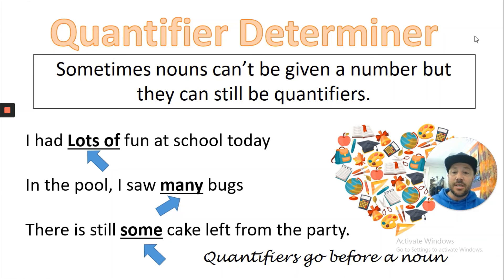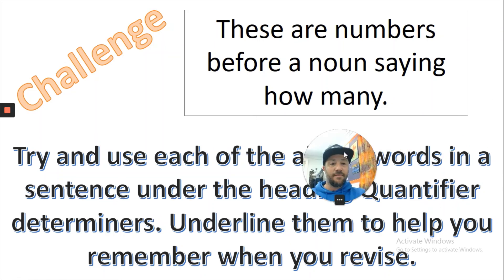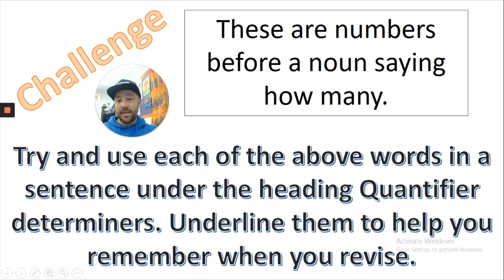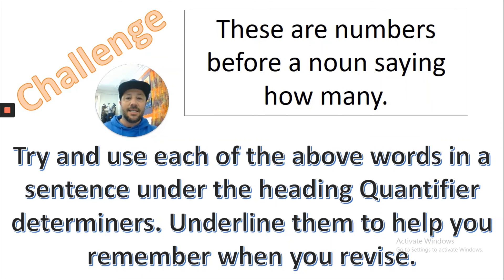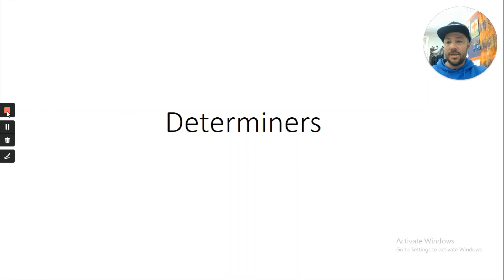Your task now is to use those quantifier determiners and try to use each one in a sentence under the heading 'quantifier determiners'. Underline them to help you remember. If you're stuck, go back to my sentences and just change them slightly. So that's our determiners for today. Go back and have another look through — just remember they go before a noun and they're usually relatively small words. I hope that helps, I hope you've enjoyed that, and I'll speak to you guys soon. Bye!